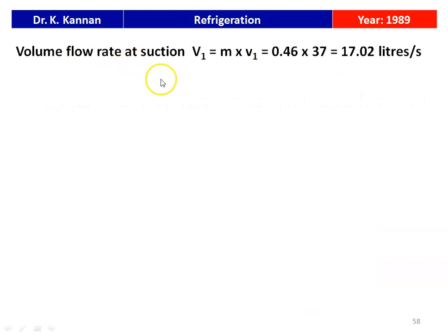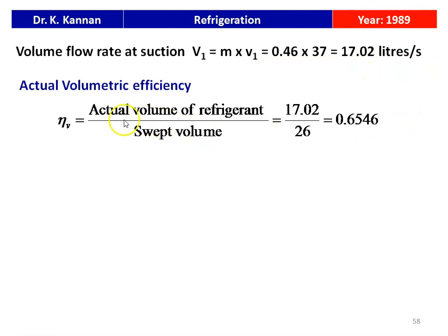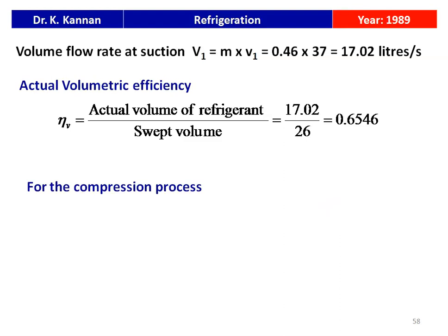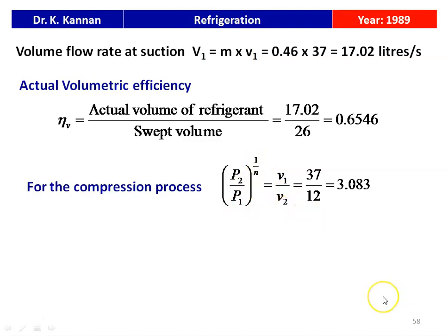Given data: clearance ratio C = 0.04, swept volume = 26 liters/s, mass flow rate = 0.46 kg/s, specific volume at suction V1 = 37 liters/kg, specific volume at discharge V2 = 12 liters/kg. The volume flow rate of the refrigerant = mass × specific volume = 0.46 × 37 = 17.02 liters/s. The actual volumetric efficiency = actual volume / swept volume = 17.02 / 26 = 0.6546, i.e., 65.46%.